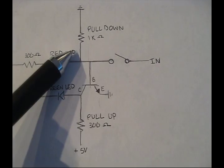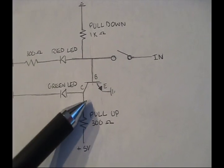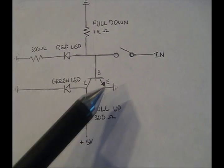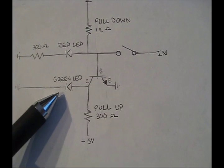But when the switch is closed, voltage flows through the base, allowing current to go from the collector to the emitter, and the voltage from the plus 5 volts goes through the pull up resistor to the emitter instead of passing through the green LED.